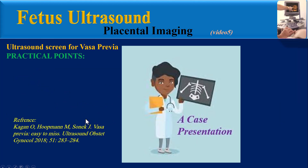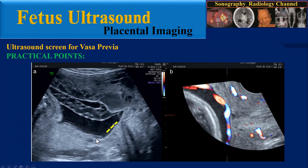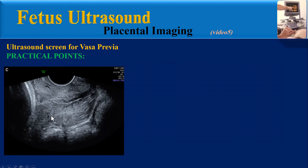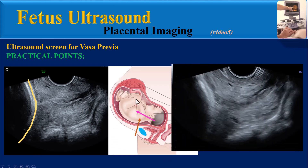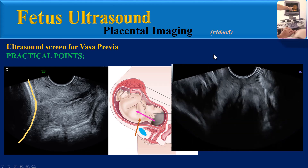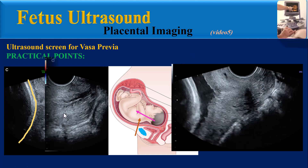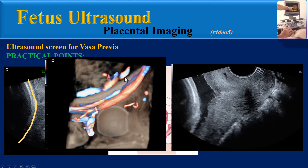Here we can review a teaching case together. This image shows a low-lying placenta with marginal placental cord insertion and a fetal vessel extending from the cord insertion to the accessory placental lobe over the internal cervical os. At 31 weeks gestation, the fetal head is applied firmly to the lower uterine segment, preventing visualization of the aberrant vessel. By performing the displacement maneuver, the fetal head is moved upward and the vessels and Vasa Previa are clearly identified on color Doppler.